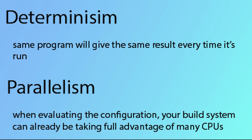The important thing about Starlark when compared to Python is that Starlark programs are deterministic and imports can be evaluated in parallel. Deterministic means that the same program will give the same result every time it's run, which is super important in a build system so you end up building the same files every time. And the ability to evaluate imports in parallel means that when evaluating the configuration, your build system can already be taking advantage of many CPUs.